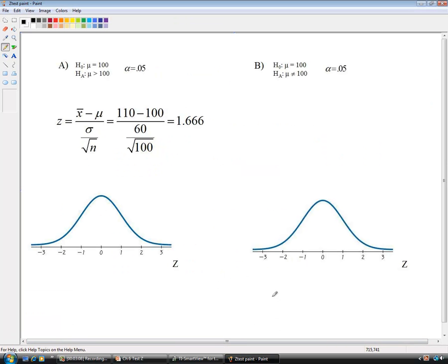Alright, I've set up a couple Z charts here. For this one, we're going to do part A, and for this one, we're going to do part B. So our right-tailed test will be over here. So the test statistic is going to be the same for both. I've calculated it by just putting in the values, and it comes out to 1.666, or about 1.67 will be fine.